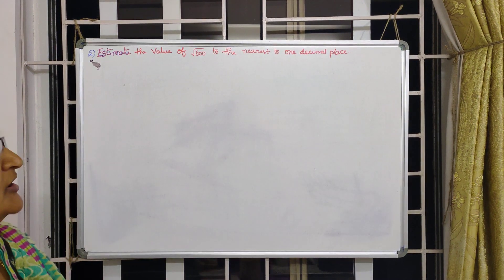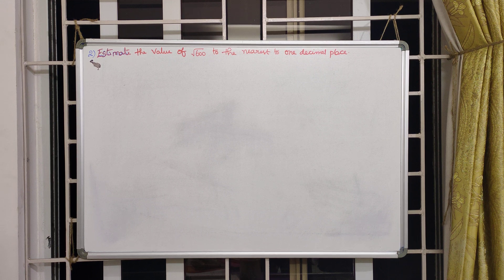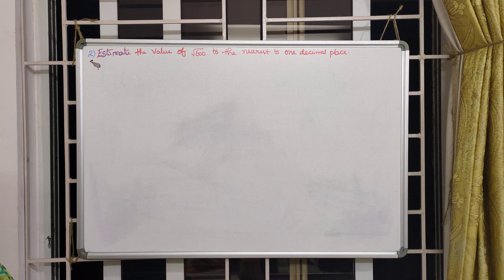Let us see the next example. Estimate the value of square root of 600 to the nearest one decimal place. We are doing estimation only, not the long division method.